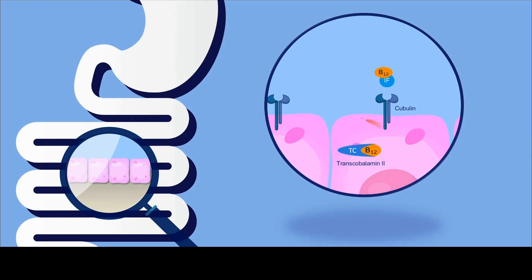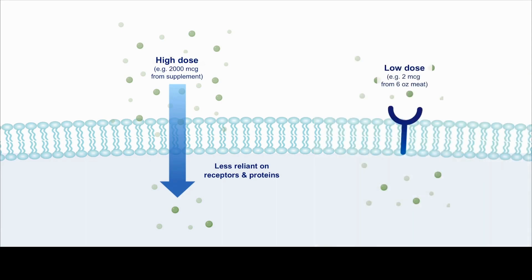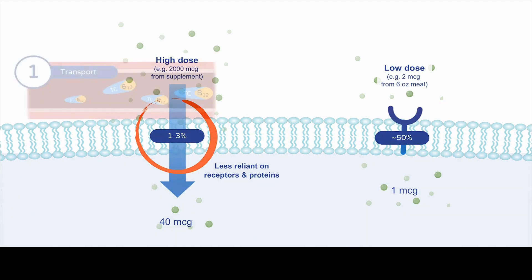Transcobalamin 2 is responsible for all subsequent transport and disposition in peripheral tissues. When you give a high dose of vitamin B12, some of it can cross membranes through passive diffusion. Low doses obtained from the diet yield about 50% absorption, whereas higher doses from supplements yield only 1–3% absorption — but you're still getting much higher systemic exposure because 1–2% of a high dose is many-fold higher than 50% of the couple of micrograms you might get in a meal.